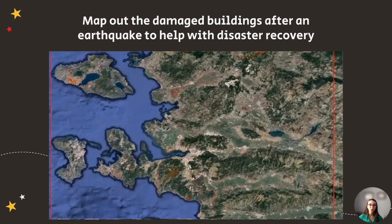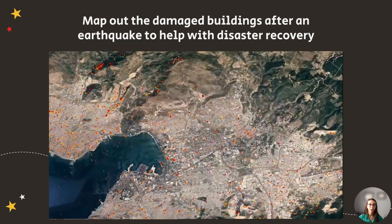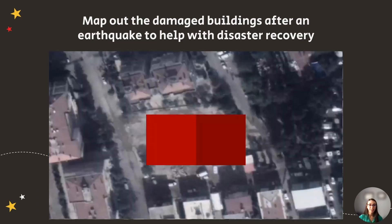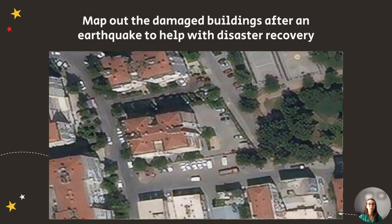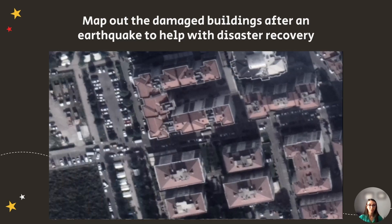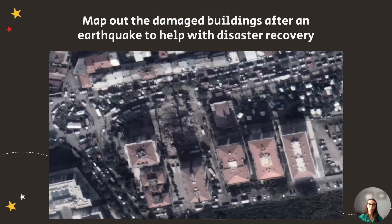The destruction caused by an earthquake can be catastrophic, and SAR data can help find the damaged buildings before the dust settles. It looks at the points of similarities between SAR images captured before and after the earthquake. This is called SAR coherence, and in this case, the loss of coherence indicates that a building has been damaged.